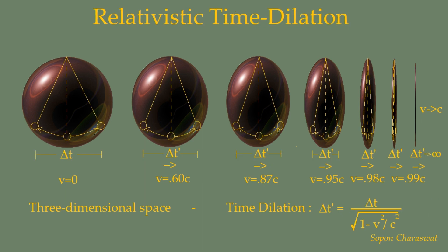According to relativity, time dilation is the difference in time intervals measured by two observers due to their relative velocity difference, or by differences in gravitational field strength. As a result of the nature of space-time, a moving clock runs slower relative to the observer. Clocks under the influence of stronger gravitational fields also run slower compared to observers in weaker fields.